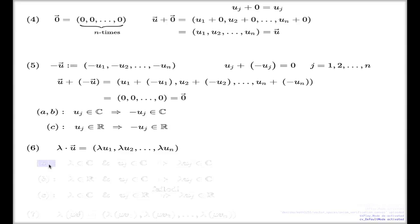And here we have a significant difference, because in example a, your scalar comes from the complex numbers, your entries come from the complex numbers, and that's why when you scale, entry will be a complex number. That's how you argue the a example.